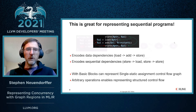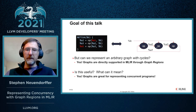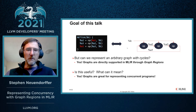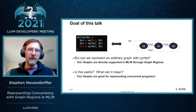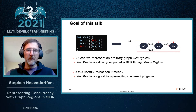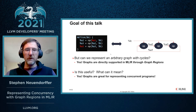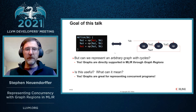But what if we want to break the rules? On the right side, I've shown a graph that's not a DAG — it's a graph with a cycle. We can think about representing this as a sequence of operations on the left, but clearly this is not an SSA form, because A1 is used in the first operation before it's defined. So the question is, can we represent an arbitrary graph with cycles in MLIR? And it turns out that yes, you can.